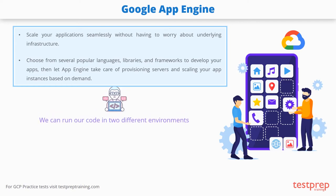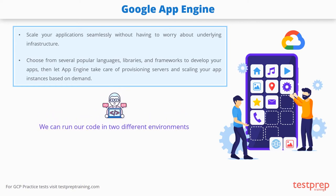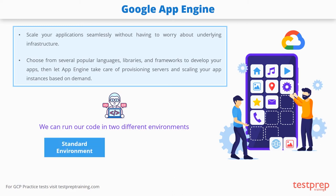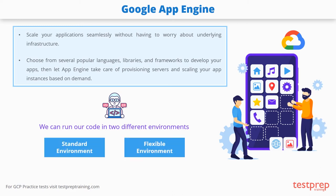With App Engine, we can run our code in two different environments: one is the standard environment and the other is the flexible environment.